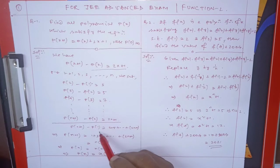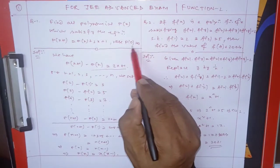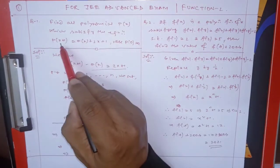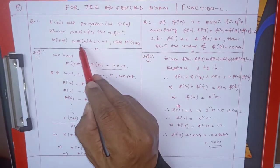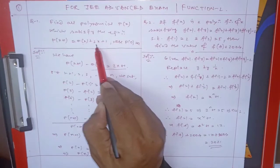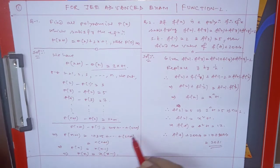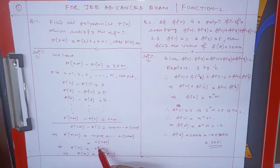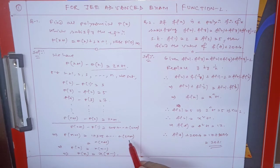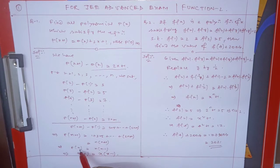After adding and cancelling terms telescopically, p(n+1) - p(1) equals the sum 1 + 3 + 5 + ... Now p(0) = 0, so p(1) = 1. Summing the arithmetic progression using n/2 × (first term + last term) gives n/2 × (2n+2)/2, which simplifies to n(n+1). So p(n) = n(n+1).